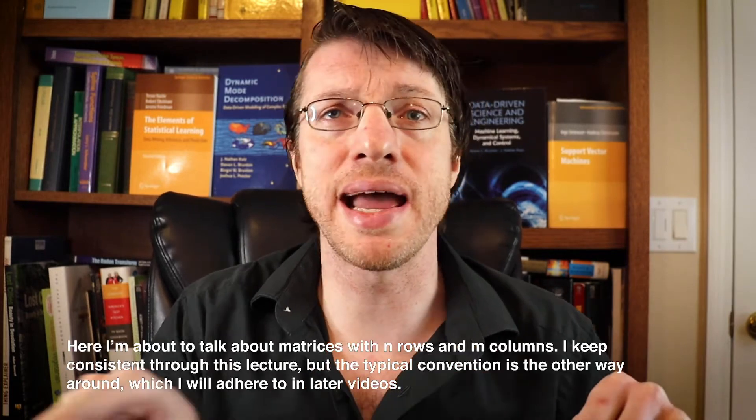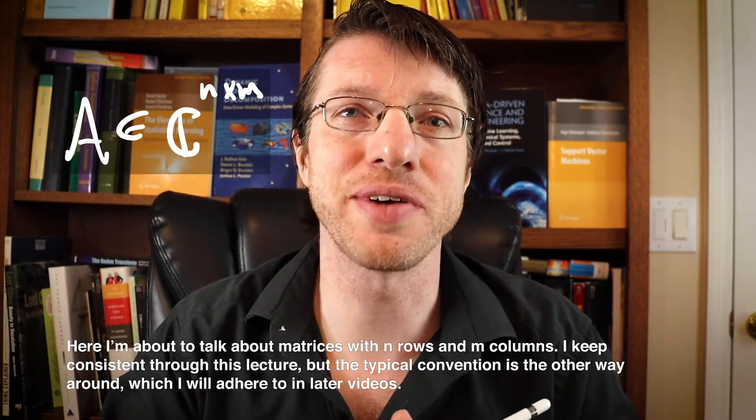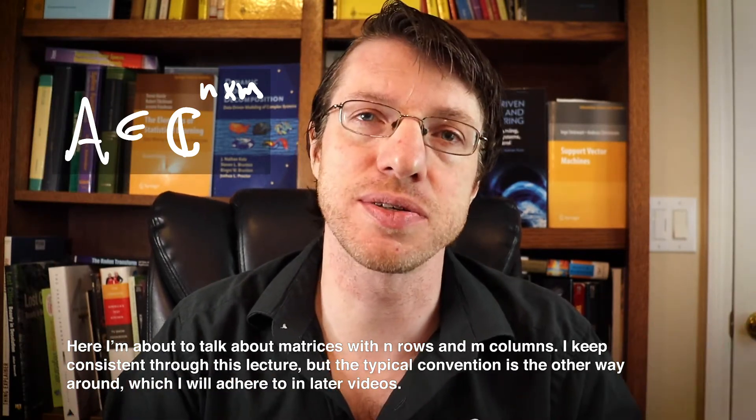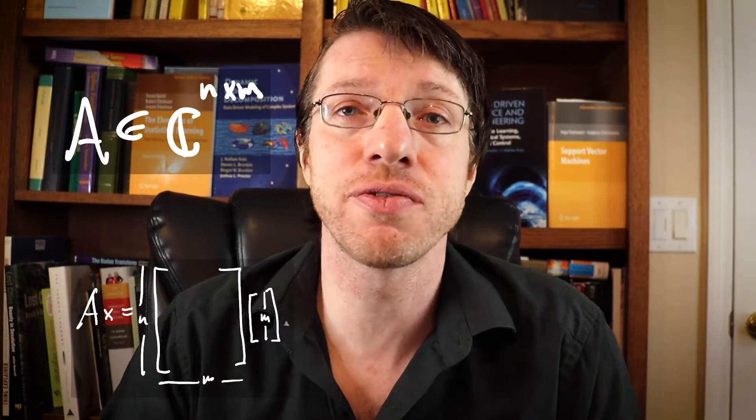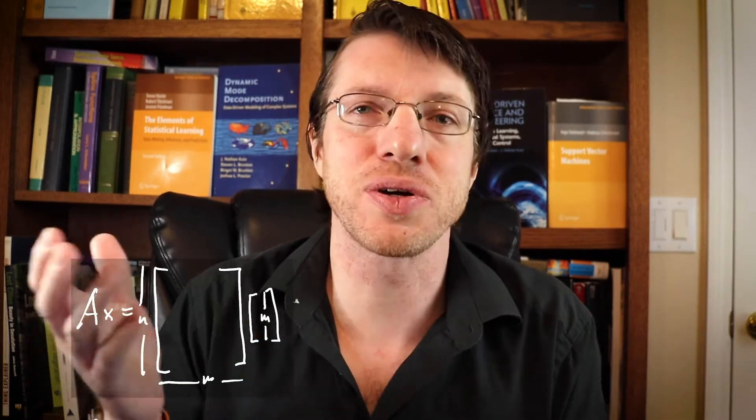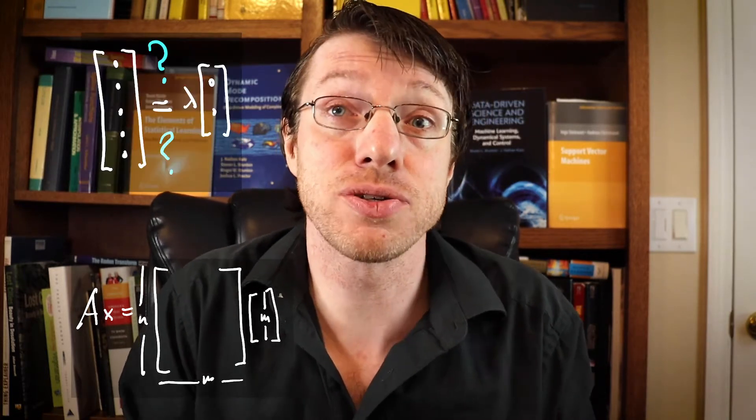So you can't just transpose any old matrix and get the same dimensions back. And so that means that if you have a matrix with say, n rows by m columns, that is a matrix that operates on m dimensional vectors. And it outputs n dimensional vectors. And so you can't have an eigenvector decomposition there because you have completely different vectors on one side versus the other. You can't say that a vector that is say, five dimensional is a scalar multiple of another vector that is two dimensional. That just doesn't work.